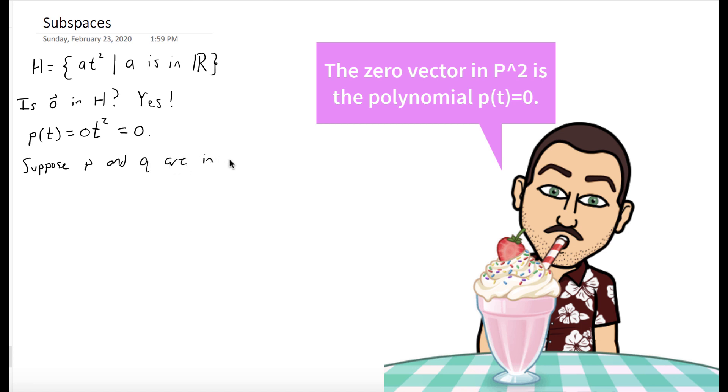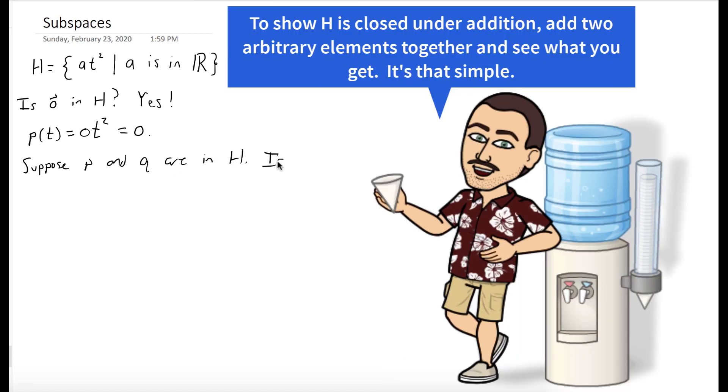We want to show that H is closed under addition. So we take two arbitrary elements of H and add them together. Addition in polynomials is just adding the two polynomials.